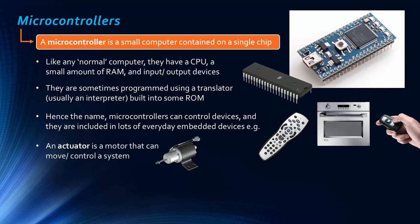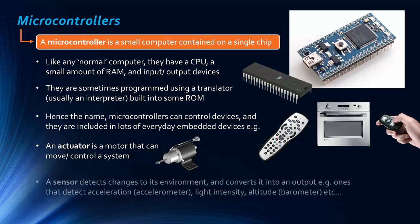It also talks about something called an actuator — a motor that can move or control a system, converting electrical power into movement. And there's also a sensor. A sensor detects changes to the environment and converts it into an electrical signal or output. You have sensors that detect acceleration, called an accelerometer, light intensity, and altitude, which uses a barometer. Also things like pressure, etc.